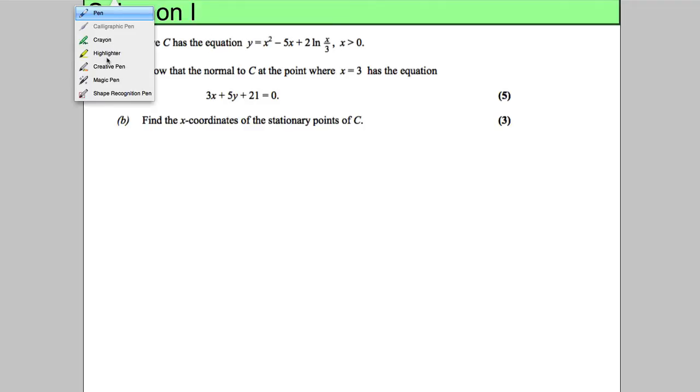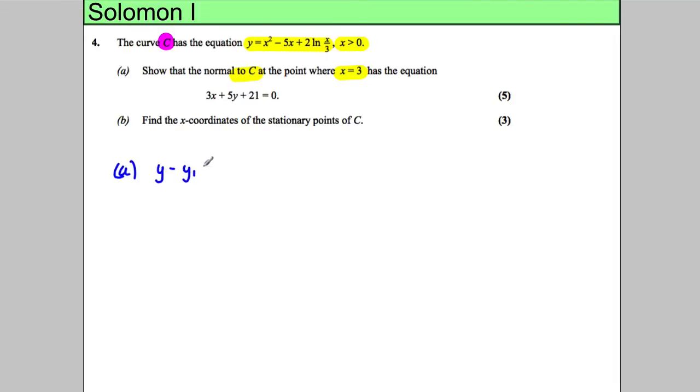In this question we're told we've got a curve C with the following equation where x has to be bigger than 0, and we're asked to show that the normal to the curve at the point x=3 is given by the following equation. The first thing I would always do is get the easy mark. Our two targets are to get the gradient and to get a set of coordinates that are on the curve.